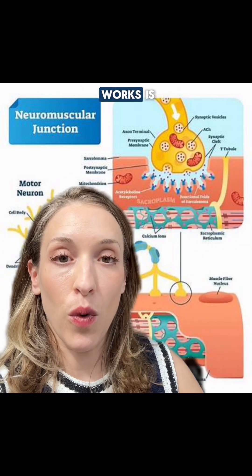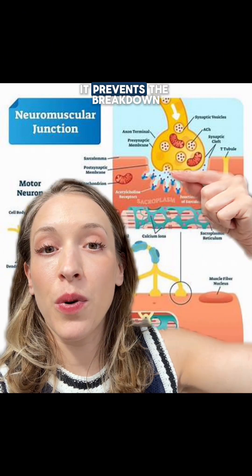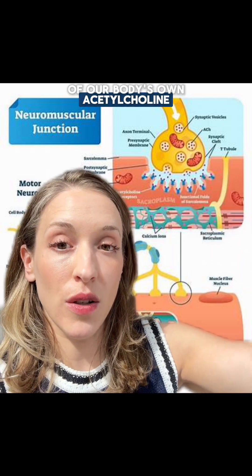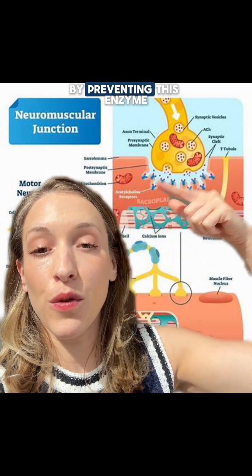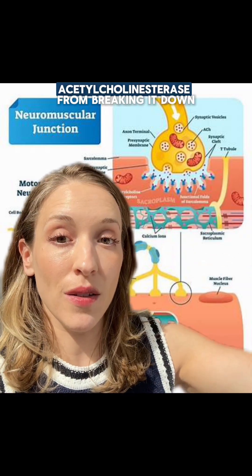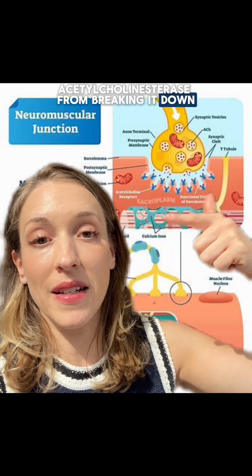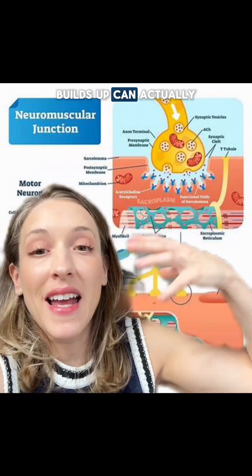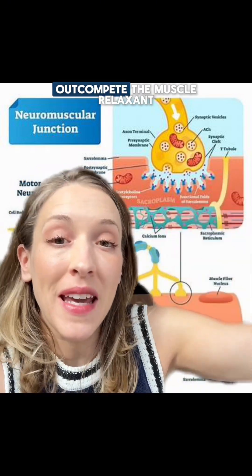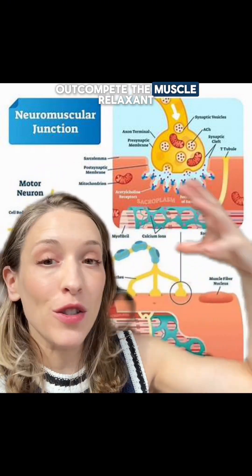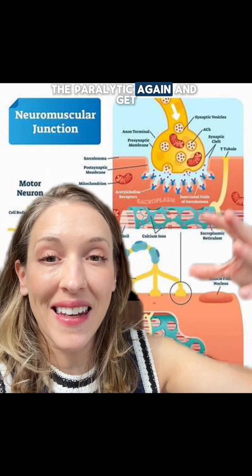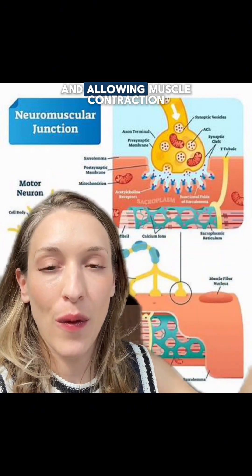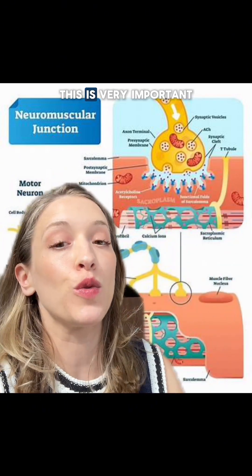The way neostigmine works is it prevents the breakdown of our body's own acetylcholine by preventing the enzyme acetylcholinesterase from breaking it down. As the acetylcholine builds up, it can actually out-compete the muscle relaxant — the paralytic — and get back to work, allowing muscle contraction to occur.